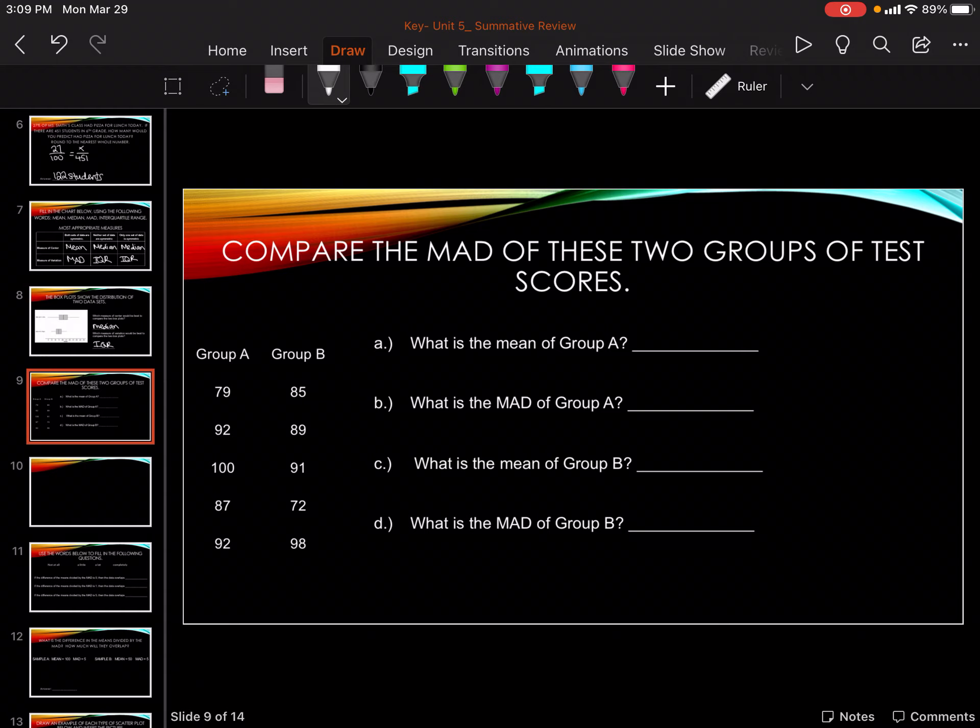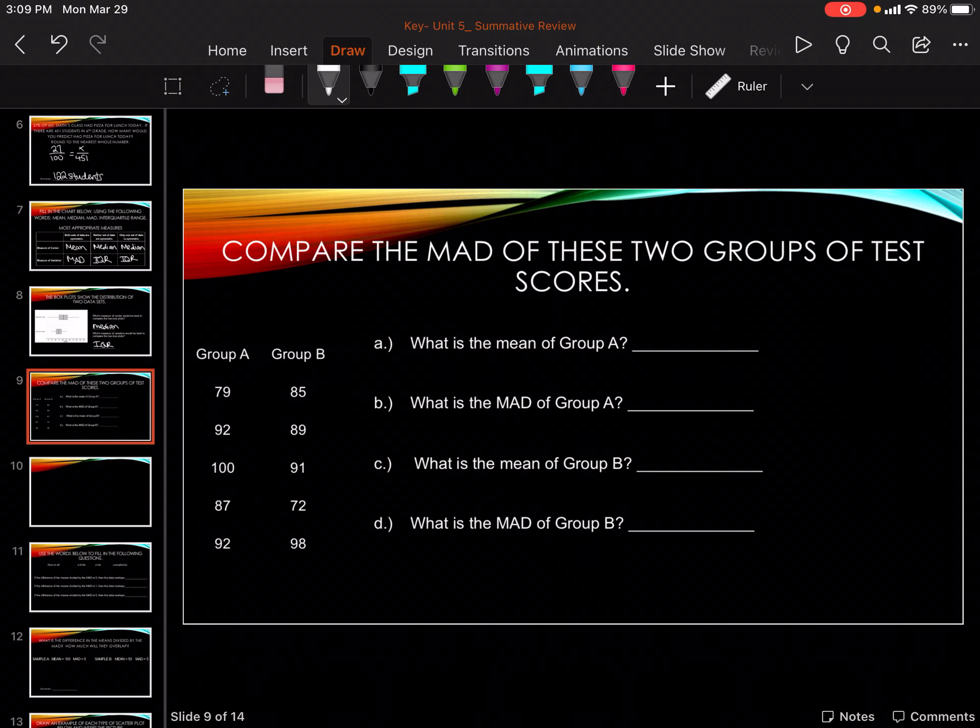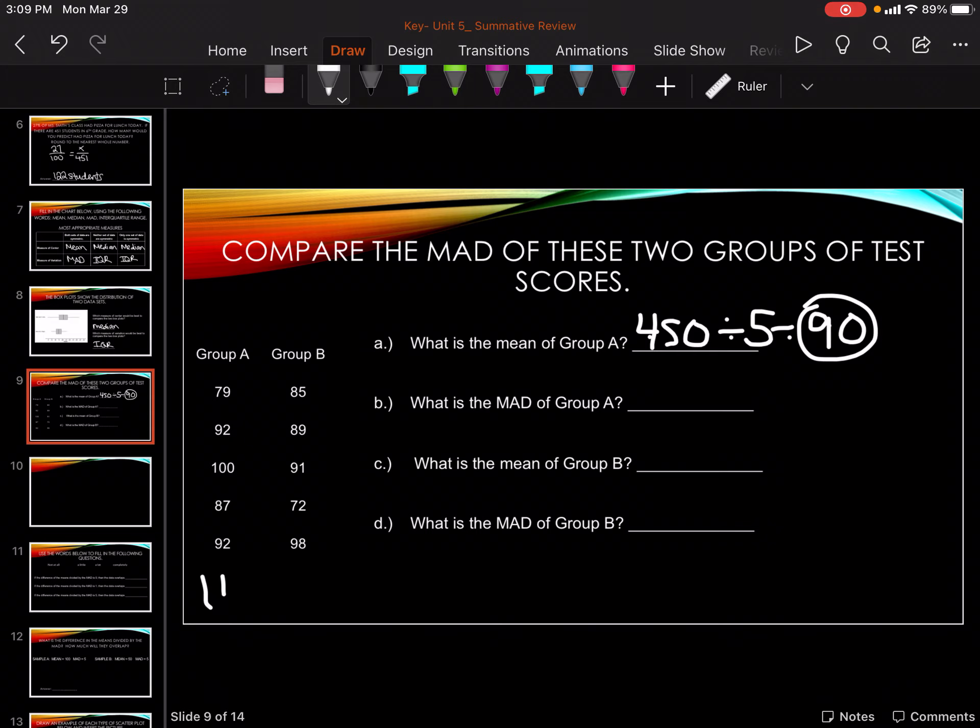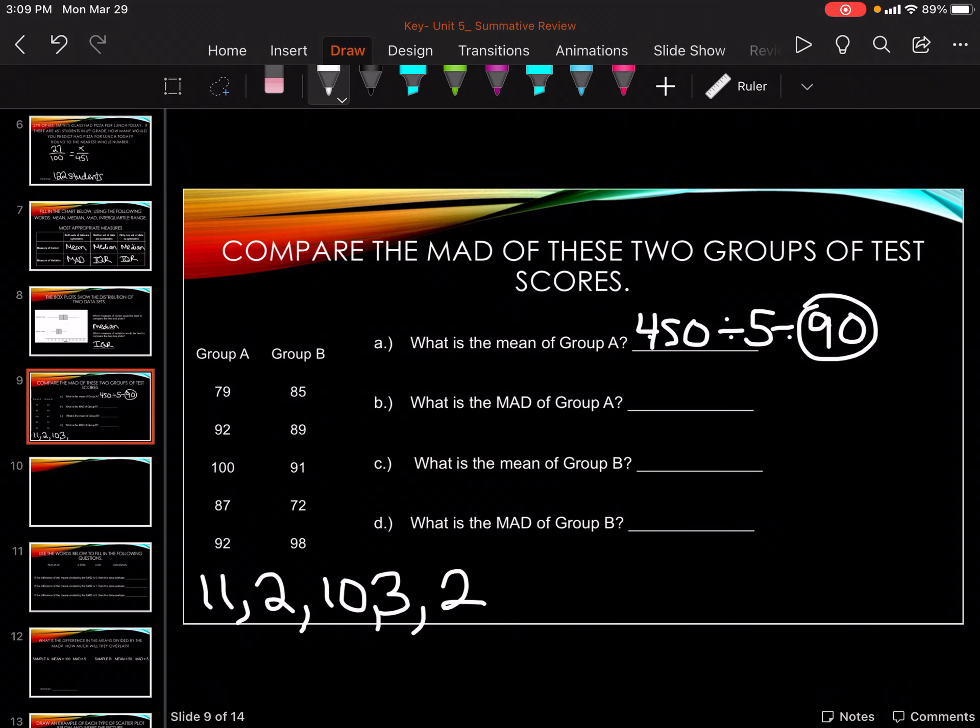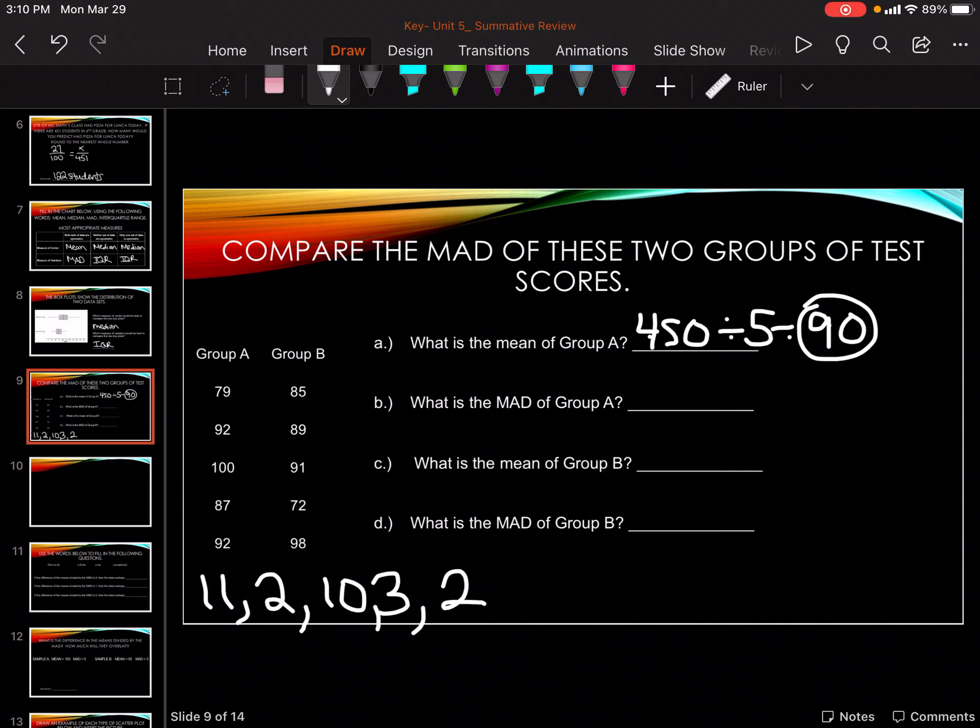Okay, so we need to find the mean for Group A. So we are going to add 79, 92, 100, 87, plus 92 gives me 450 divided by 5 gets me a mean of 90. So let's see how far away each number is from 90. So 90 minus 79, so 11, so 11, 2, 10, 3, and 2. So we're going to add them up and divide by 5. So 11 plus 2 plus 10 plus 3 plus 2 divided by 5, 28 is 5.6 for Group A.